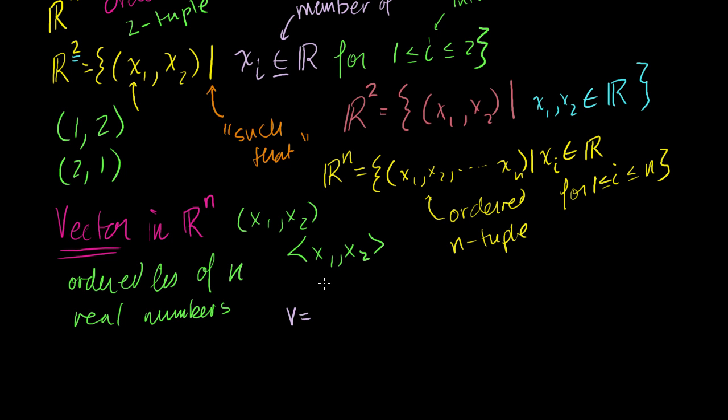So what is a vector in ℝⁿ? Well, a vector in ℝⁿ really is just a particular instance of one of these n-tuples. I'll just call it an ordered list of n real numbers. And you can represent a vector in a bunch of different ways. You could represent it like a two-dimensional vector as (x₁, x₂), kind of like a coordinate, or with brackets like that. These are all just syntax, different ways of representing the same information. And for most of what we talk about in linear algebra, we're going to represent them as essentially these columns.